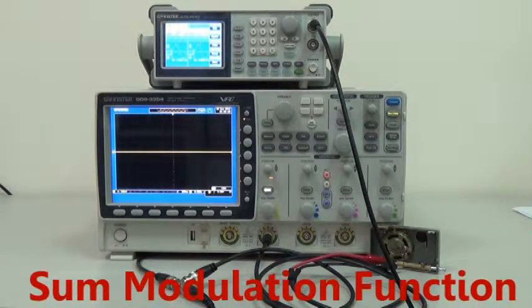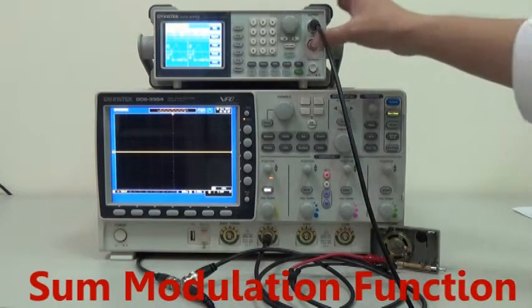Use preset parameters of AFG2225: frequency 1 kHz and amplitude 3V peak-to-peak. Press output.